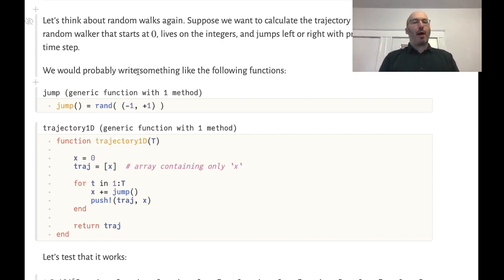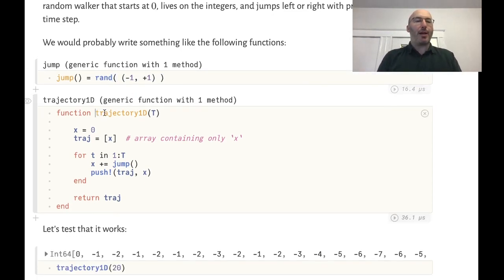You would probably write something like the following. We're going to write a function called jump which just chooses a random direction left or right with probability one-half, and then we would write something like this 1D trajectory function that takes in the time capital T that we want to run the simulation for.